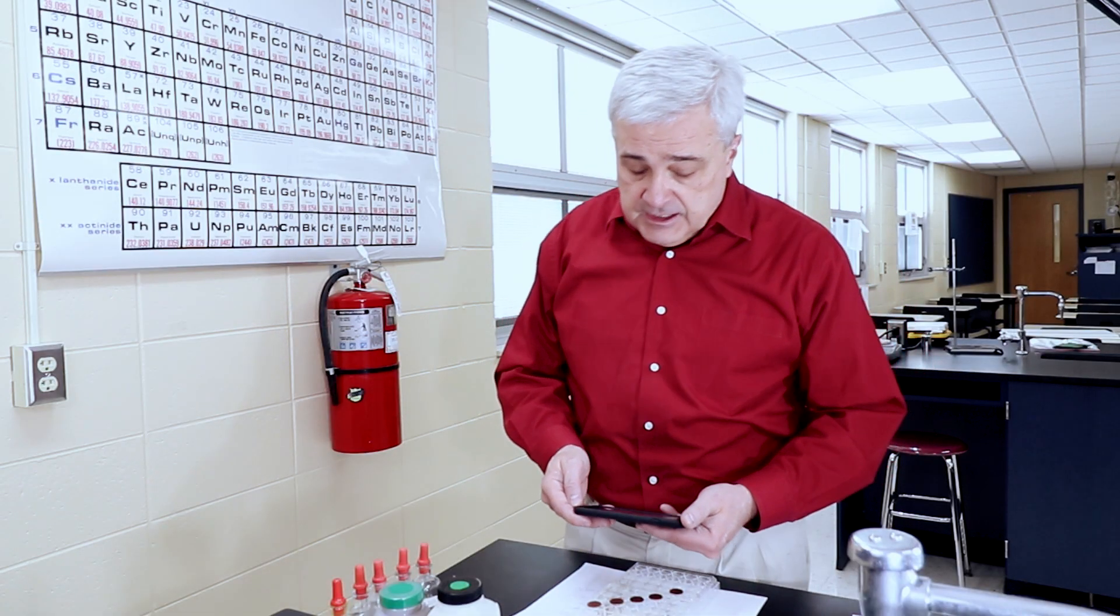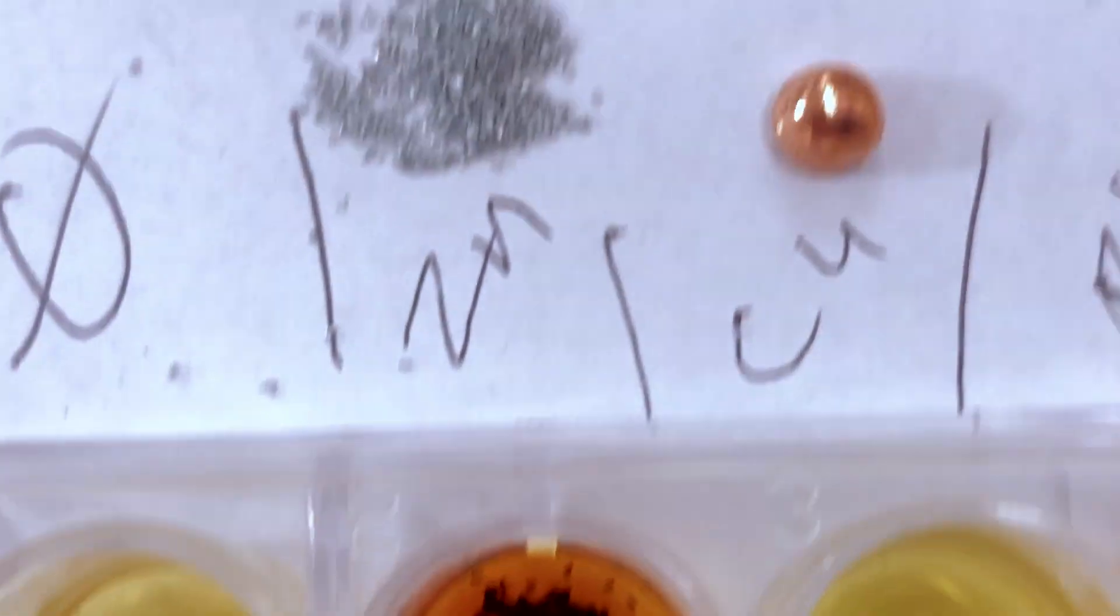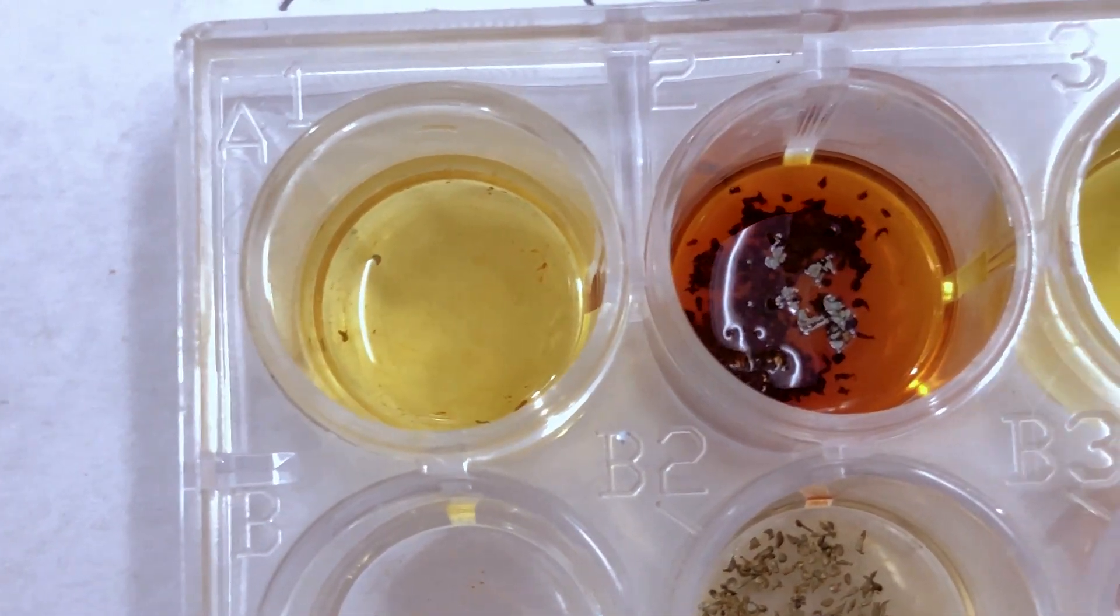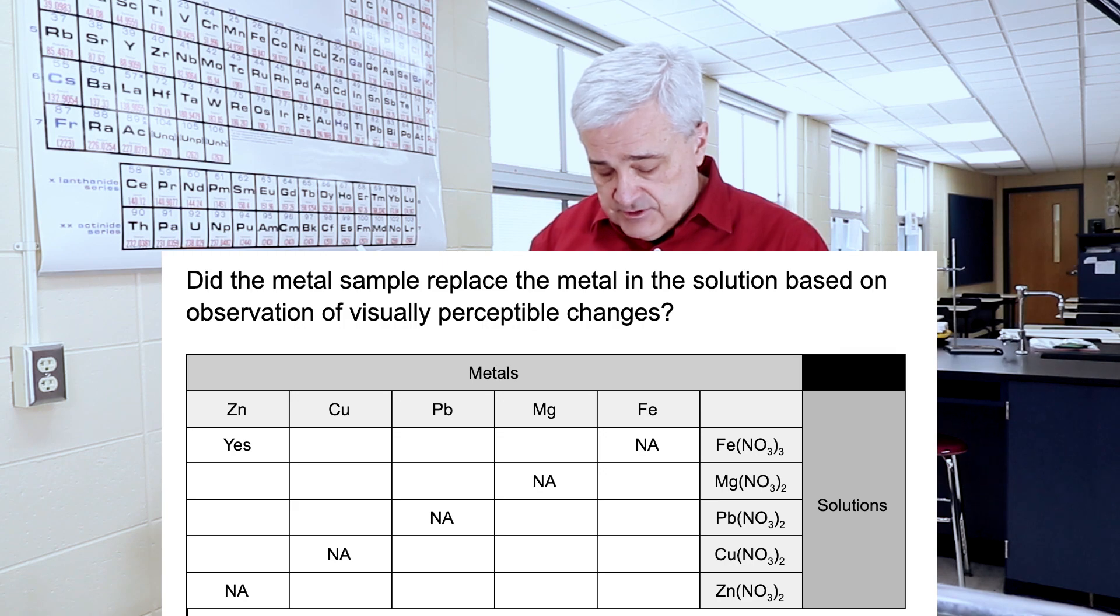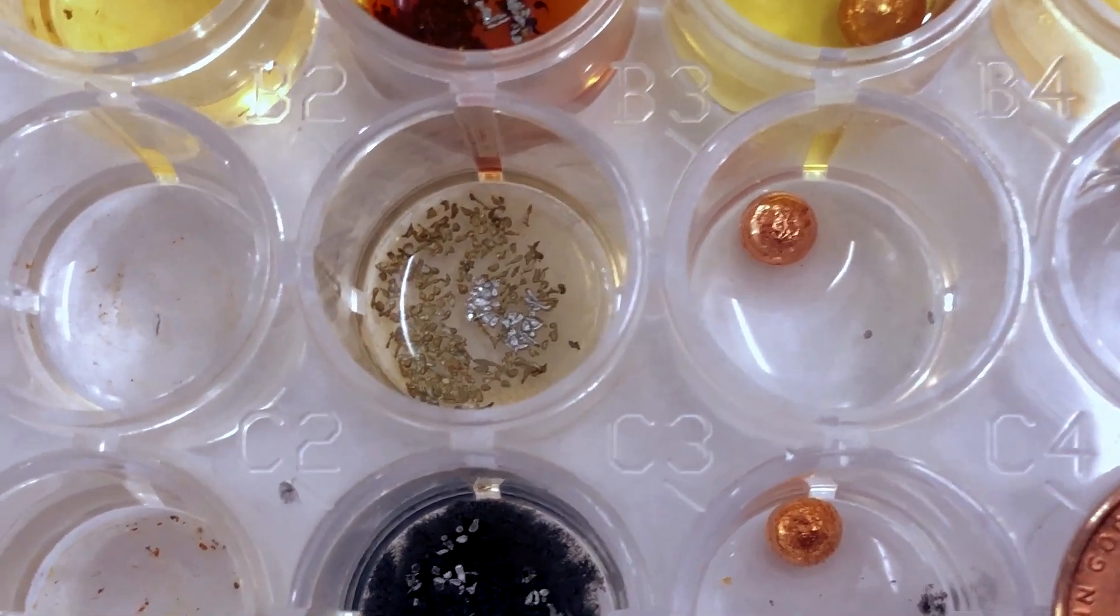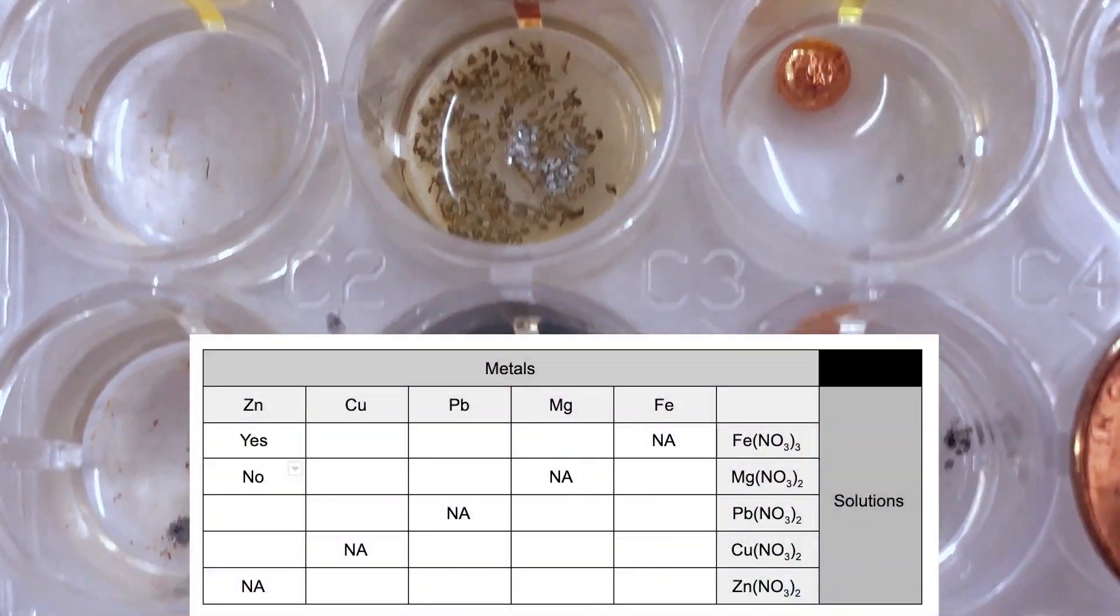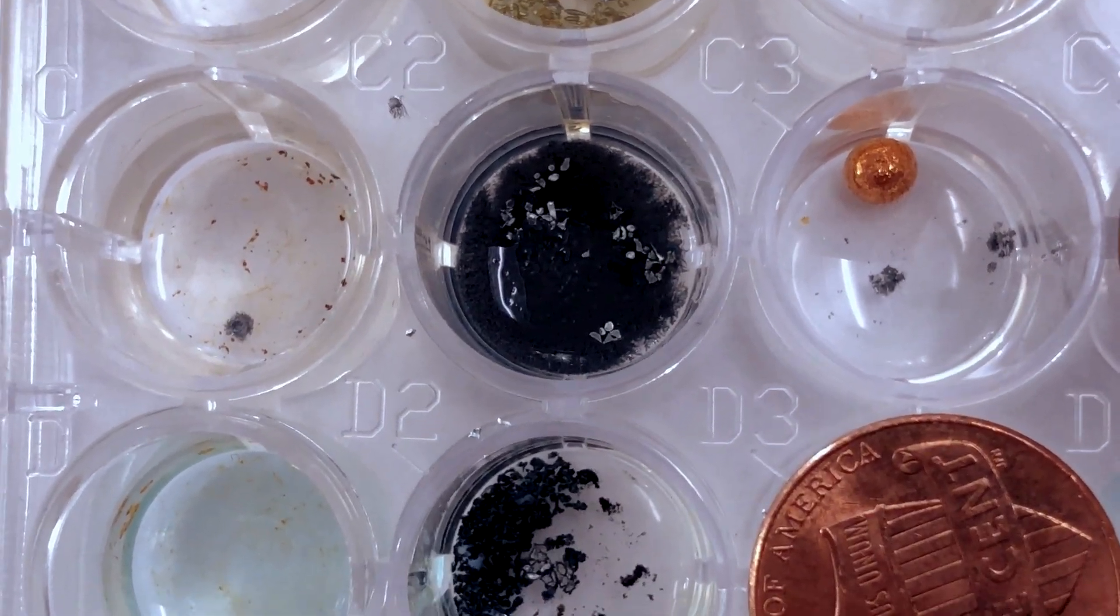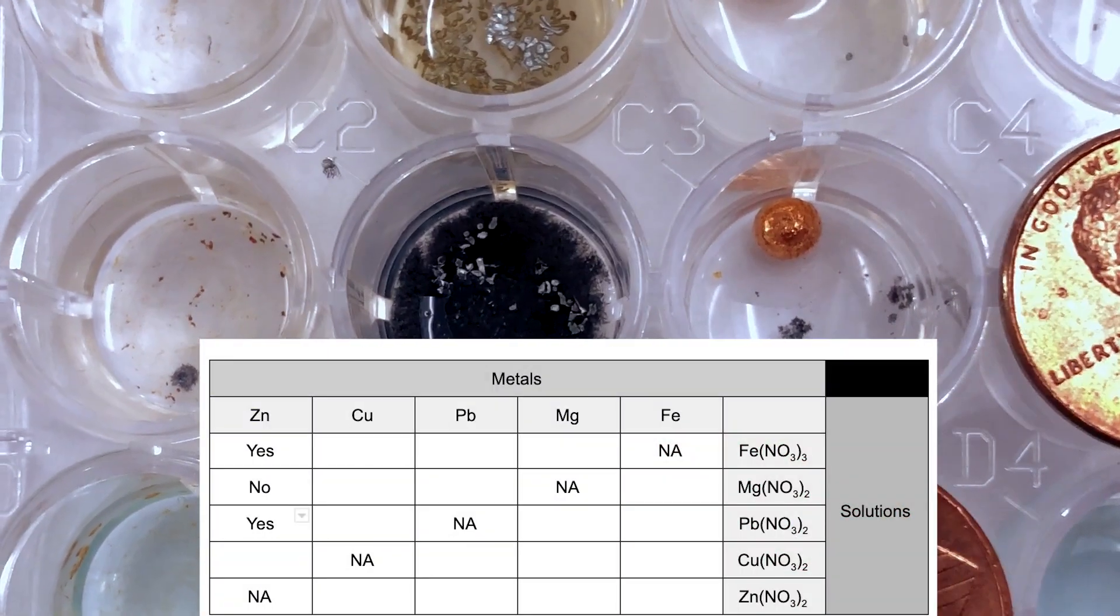So we'll start with, did the zinc react? Did we have zinc reacting? So this is what the zinc looks like before, and this is what the iron solution looks like before. So we very clearly have some change, definitely some kind of a change there. Next, we have the zinc and the magnesium. There doesn't really seem to be any change noticeable in that. That does not seem to have changed.